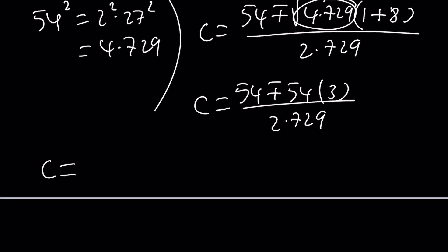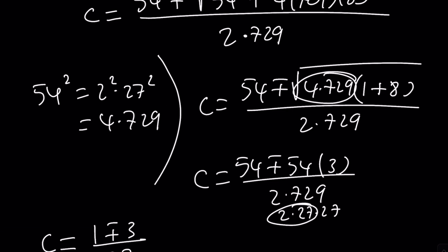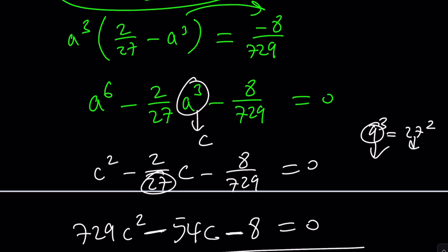This shouldn't be hard to solve because you can divide everything by 54, since the denominator is 54 times 27. Taking out a factor of 54, you get 1 plus or minus 3, divided by 27. From here, you get the c values: 4 over 27, or negative 2 over 27.